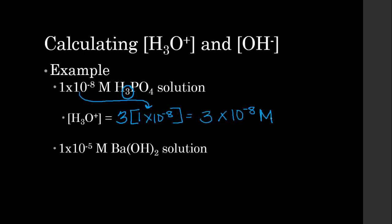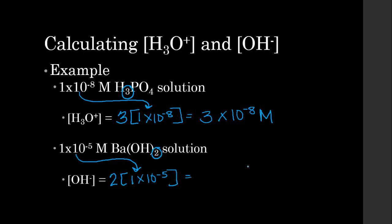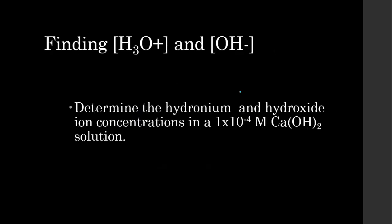The same applies to a compound that has more than one hydroxide. If I have 2 hydroxides, I take 2 times the molarity, which is 1×10⁻⁵, and I get a hydroxide ion concentration of 2×10⁻⁵ molar.